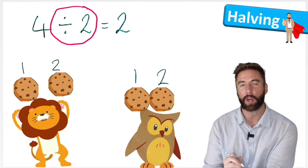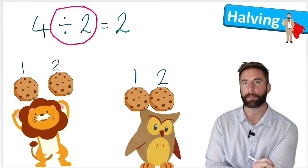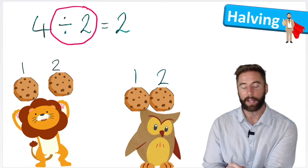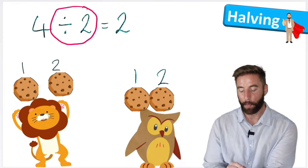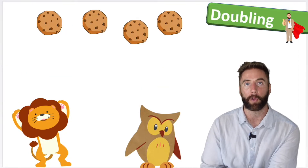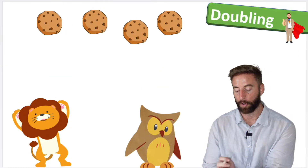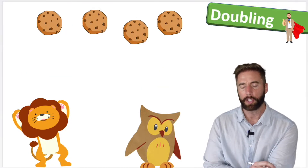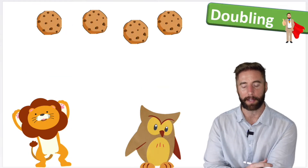So what we can see here is halving is just the same as saying divide by two. Let's try and remember that, because that's going to be really important later. Now let's say we wanted to double our cookies.